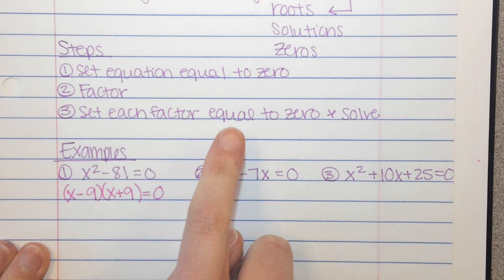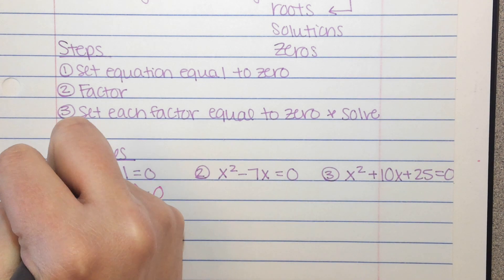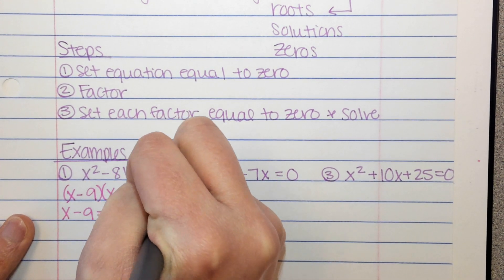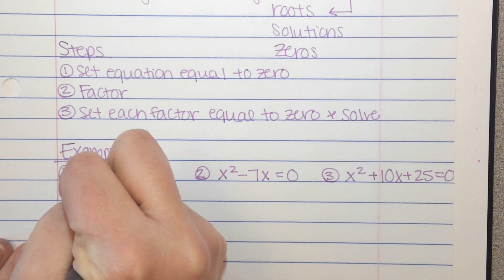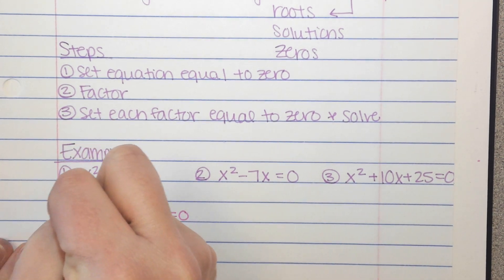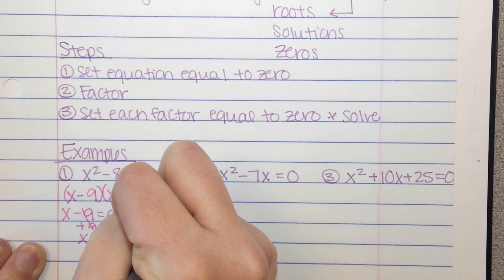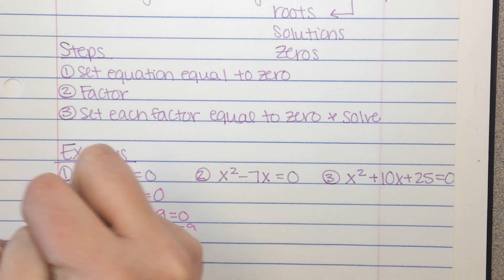We bring down our equal to 0. Now, we set each factor equal to 0 and solve. So this is where it's a little different. We're going to have x minus 9 equals 0, and x plus 9 equals 0. And I need to solve each of those. So on this one, I'll add 9, and I get x equals 9. On this one, I'll subtract 9, and I get x equals negative 9.